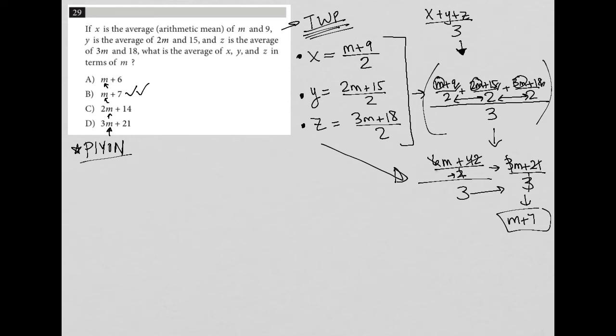We can still answer this without doing all that. So plug in your own number, the way that we would do that is we'd say m is equal to, make up your own number. I'm going to say 2. I always use 2 if I can. So what does that mean? That means x, instead of m plus 9 over 2, is going to turn into 2 plus 9 over 2, which is 11 over 2. And for y,